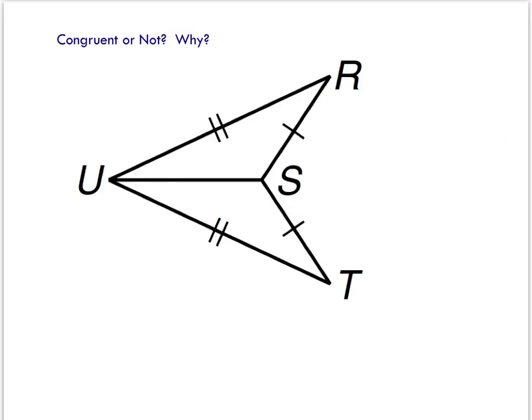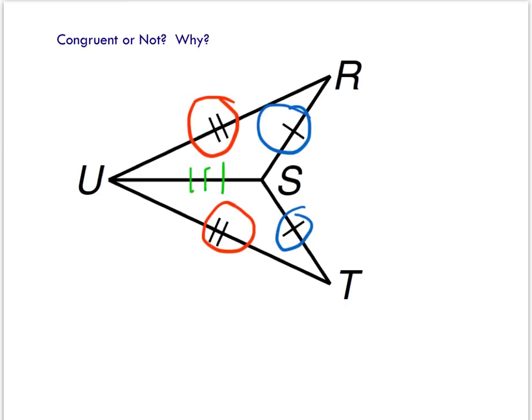How about these triangles? Can you prove that they're congruent? I've got one pair of sides, a second pair of sides, and a shared side up the middle: US. So yes, I can prove that these triangles are congruent by side-side-side.